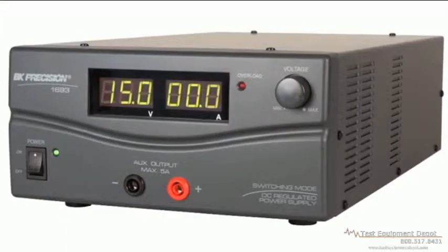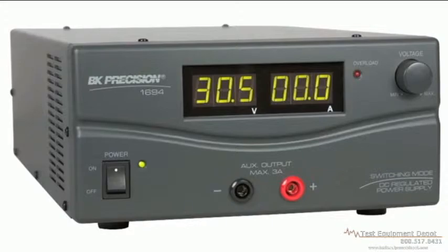The 1693 is a 60 amp 1 to 15 volt supply, and the 1694 is a 30 amp 1 to 30 volt power supply.